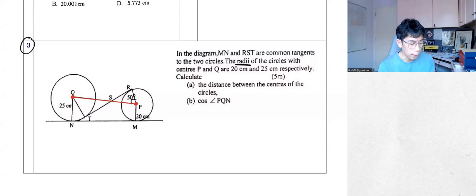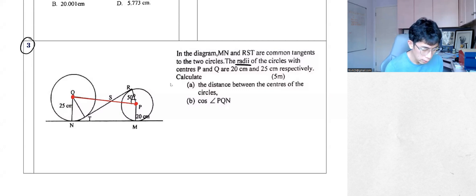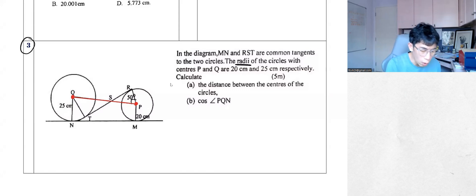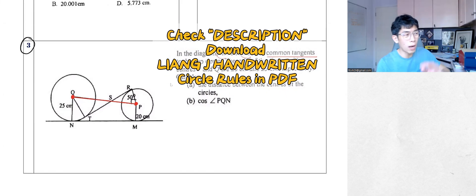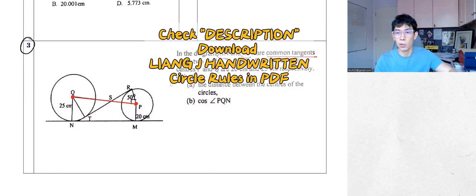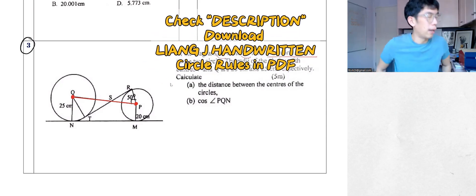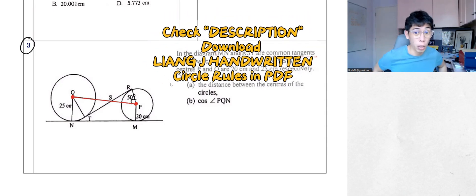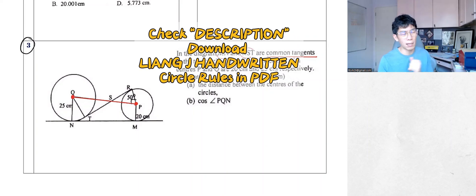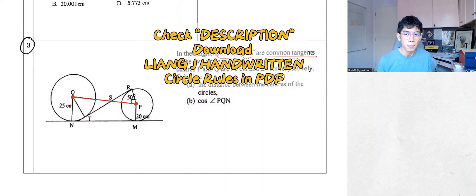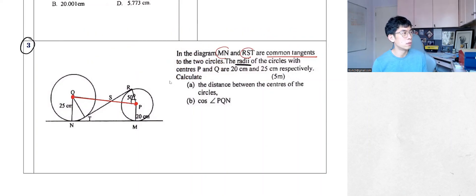I'm going to read again. It says calculate distance. MN, R, S, T — it shows common tangents. So I'm going to ask everyone — you can refer to the extra paper I mentioned — can you tell me what's so special about common tangents?